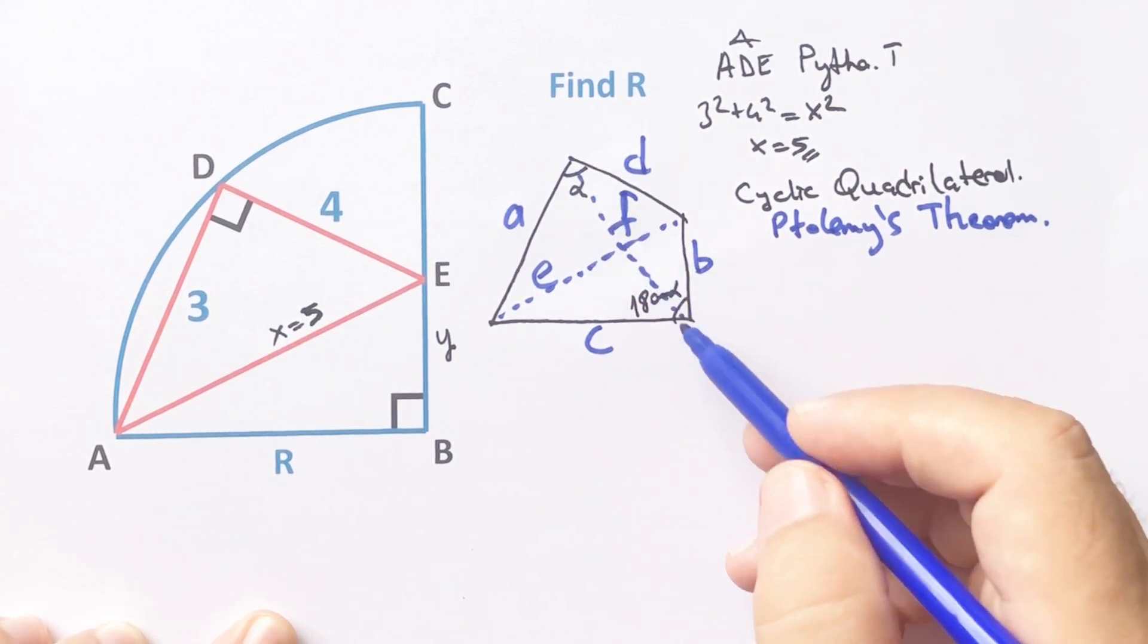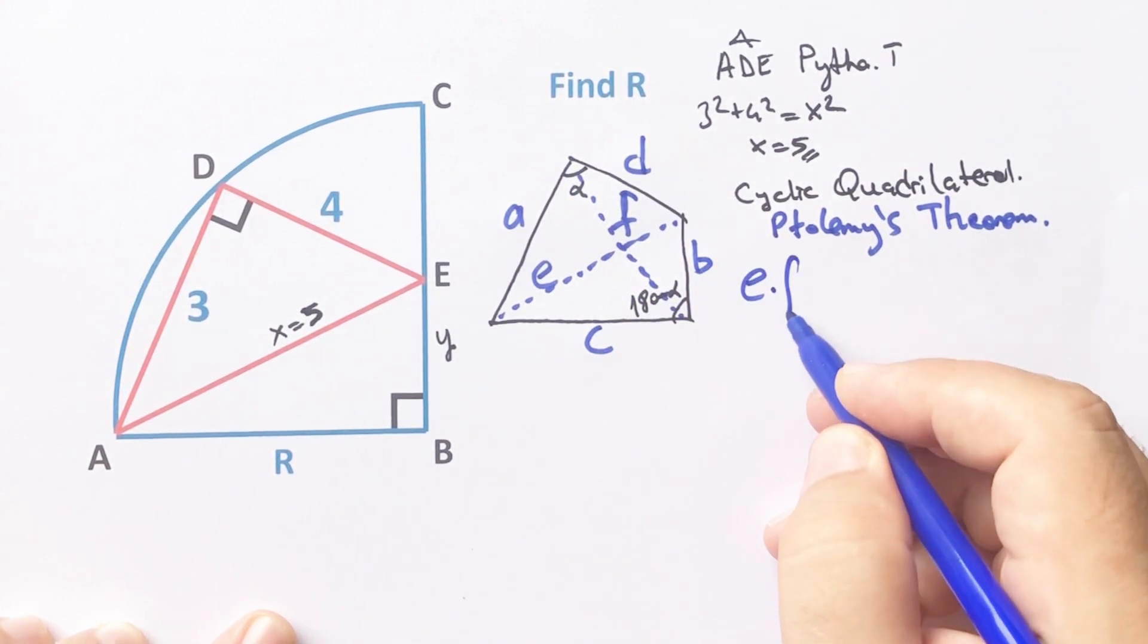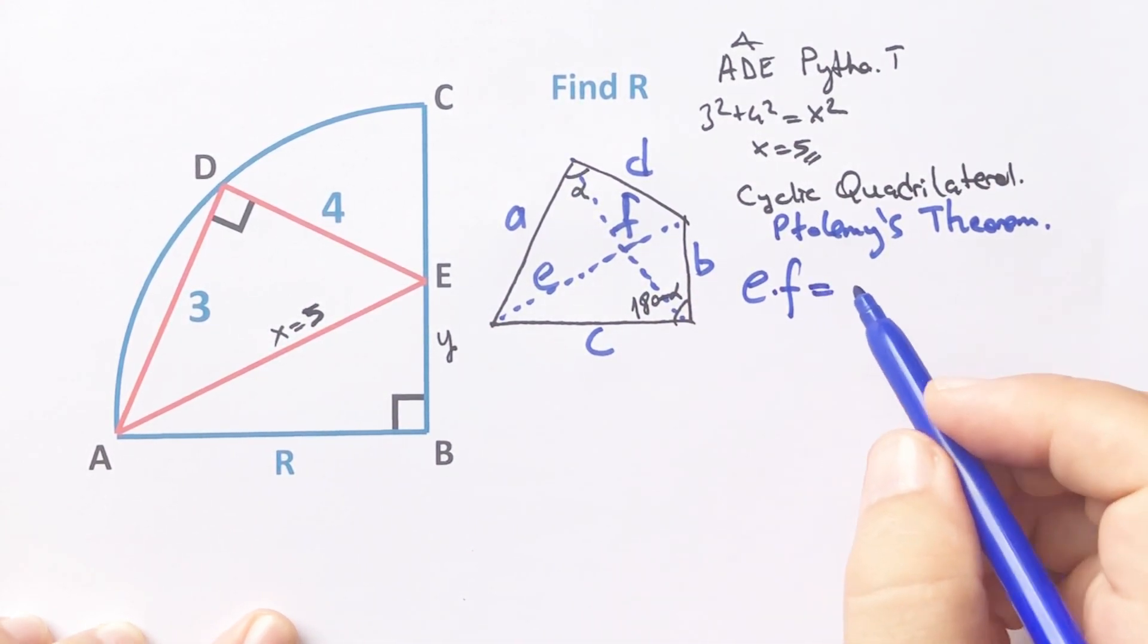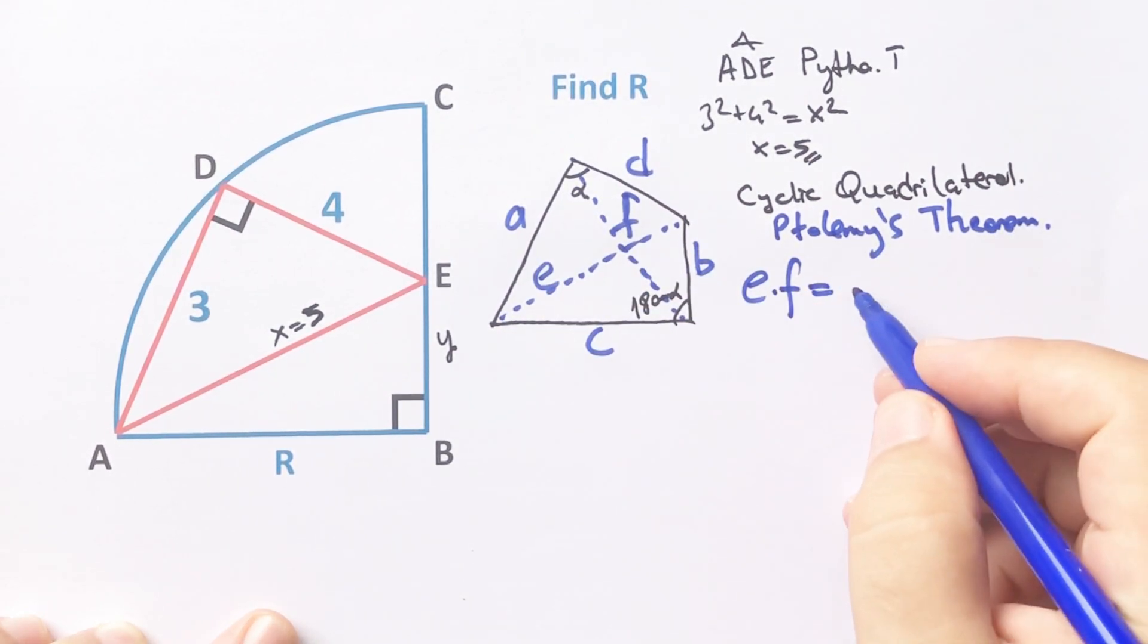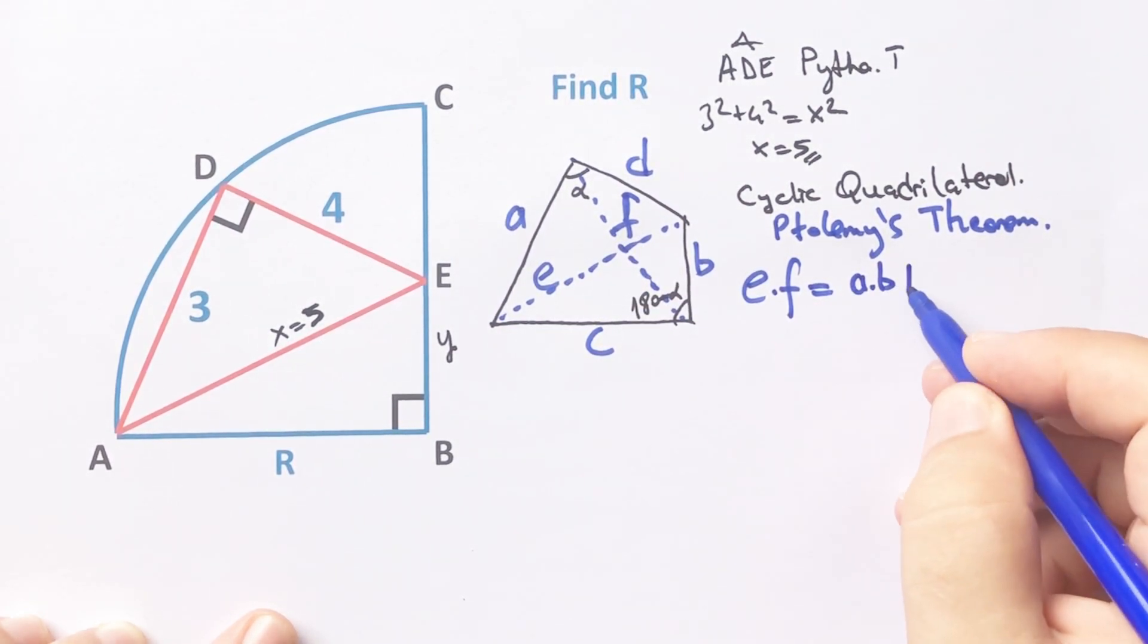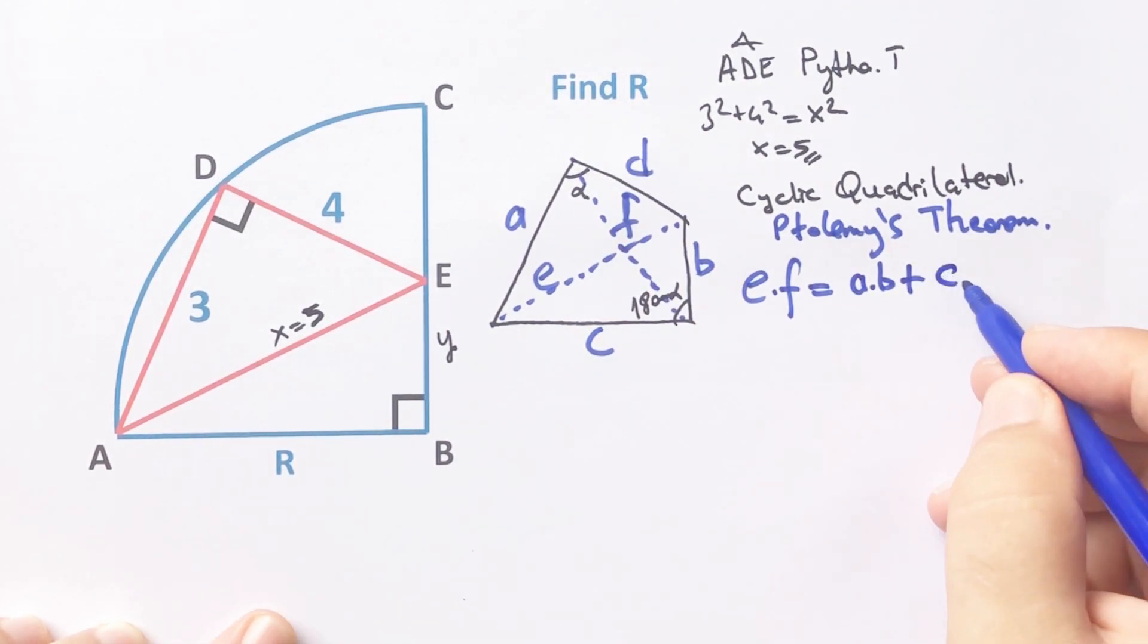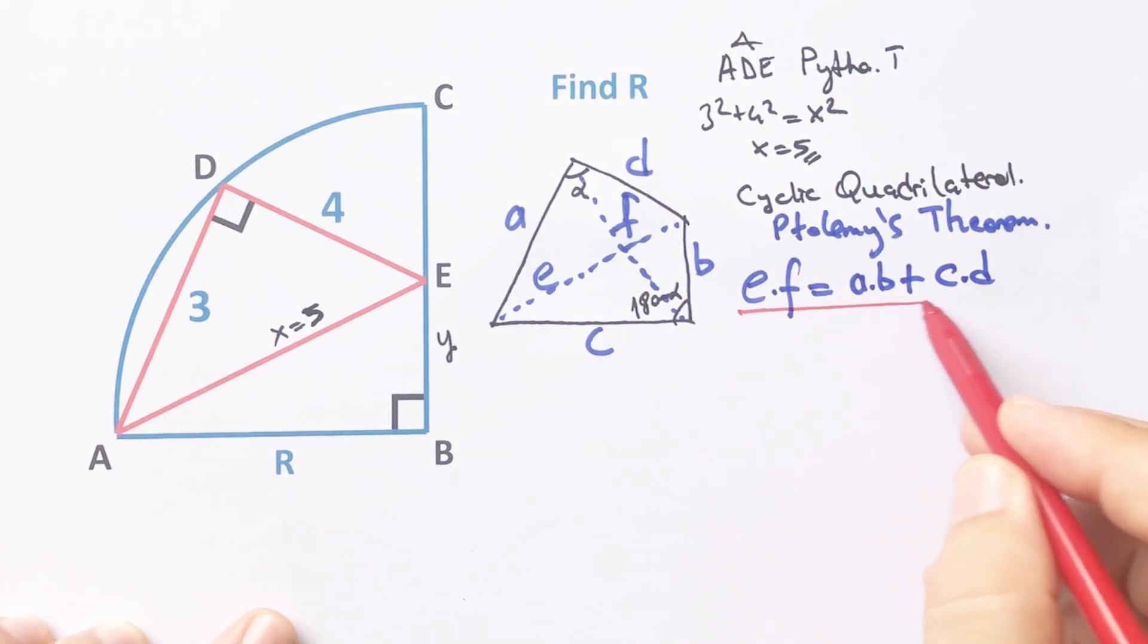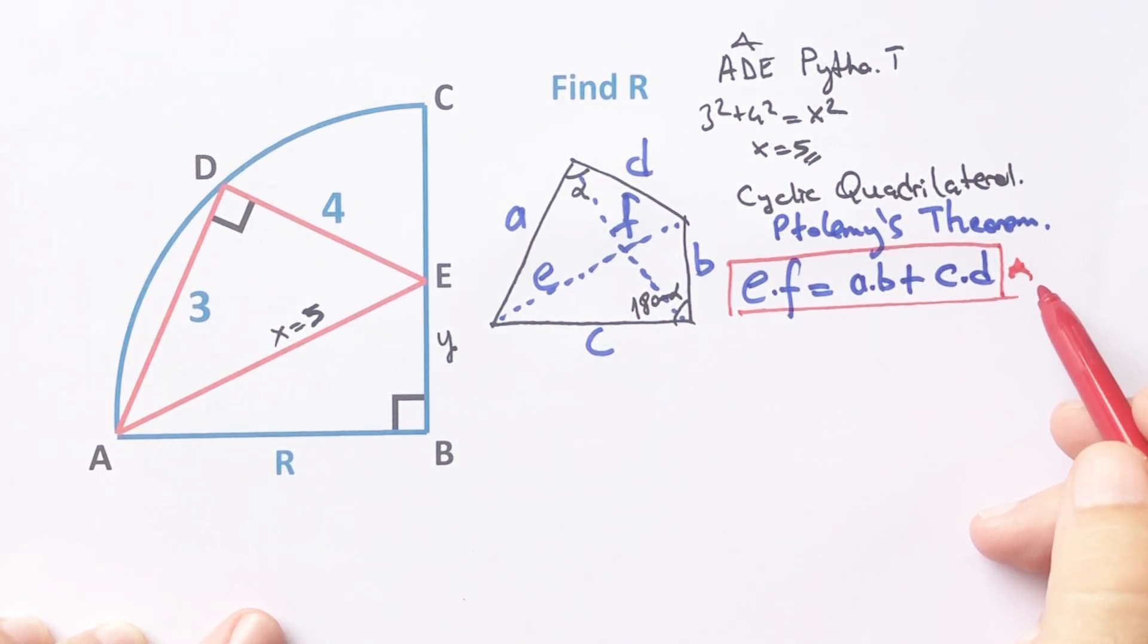According to Ptolemy's theorem, e times f equals a times b plus c times d. This is very important, especially for special questions.